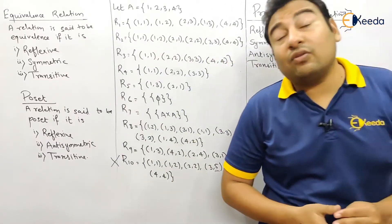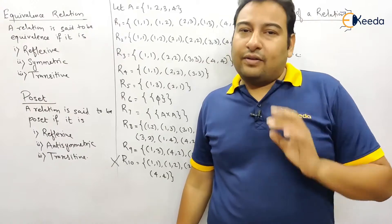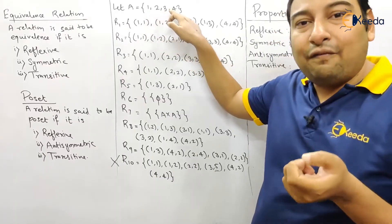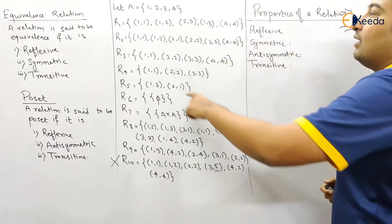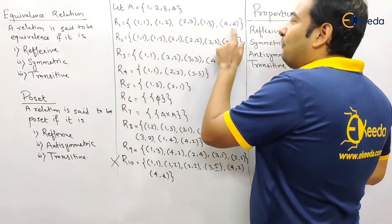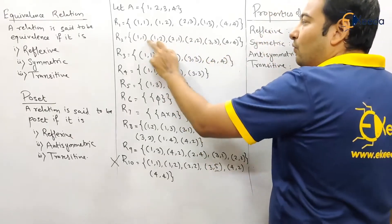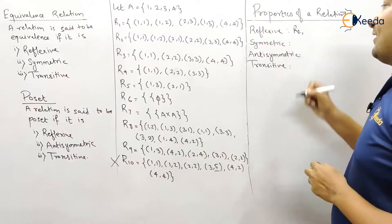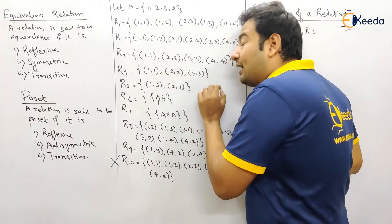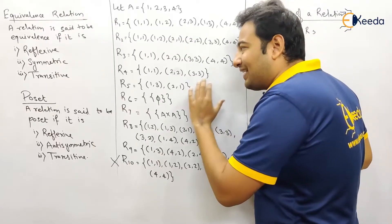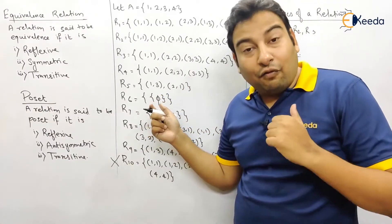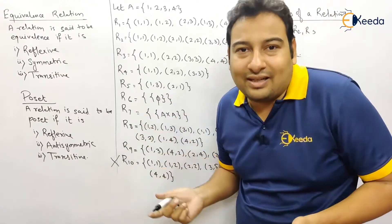Now we identify which of the remaining nine relations are reflexive. The criteria: all self-elements (1,1), (2,2), (3,3), (4,4) must be present. For R1: (1,1) is present but (2,2) is missing — not reflexive. For R2: (1,1), (2,2), (3,3), (4,4) all present — reflexive. R3 is also reflexive. R4: (4,4) is missing — not reflexive. R5: not reflexive. R6 is null — nothing is present — not reflexive.